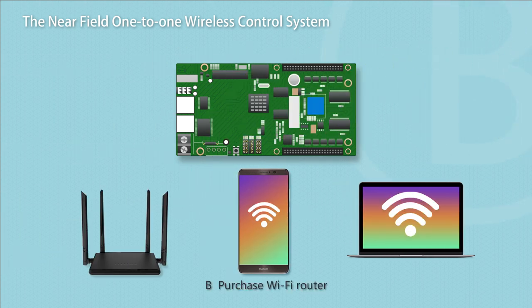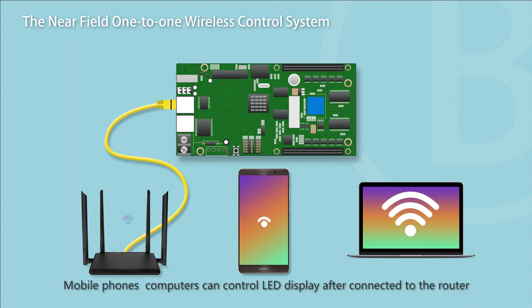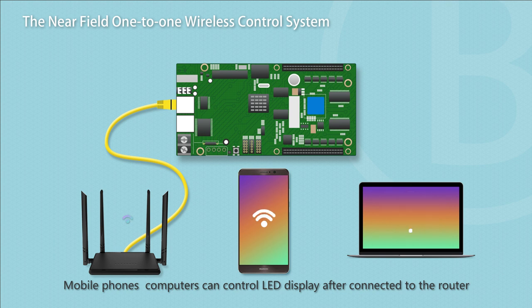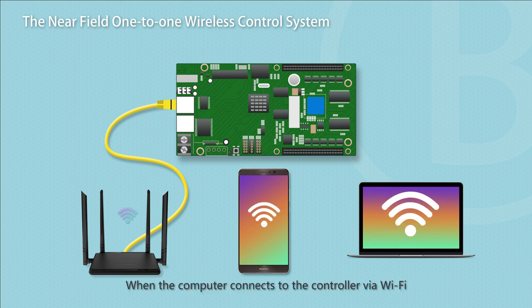Option B: Purchase a Wi-Fi Router. Use a cable to connect the controller and the router. Mobile phones and computers can then control the LED display after connecting to the router.